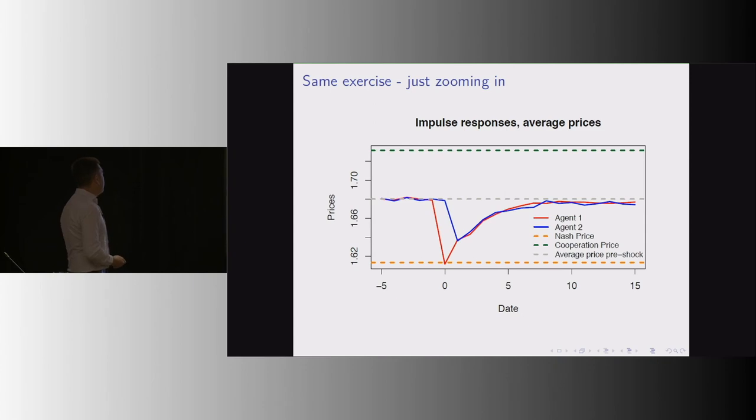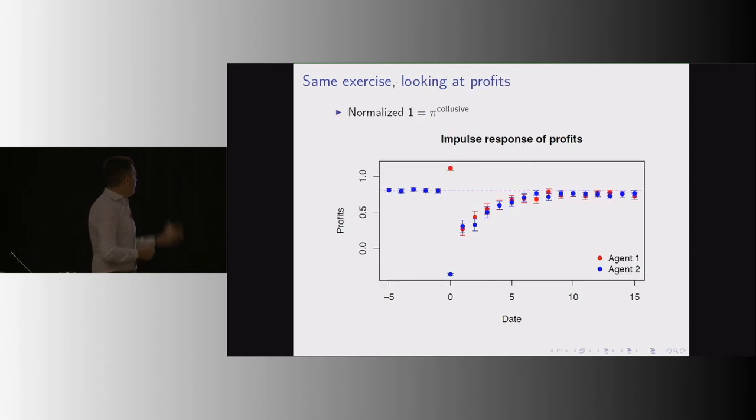So let me zoom in. After player one lowers its price, player two comes in and punishes player one. And then after that, both players go back to the collusion strategies. This is what happens to profits.